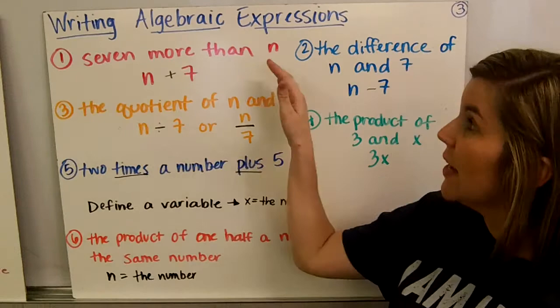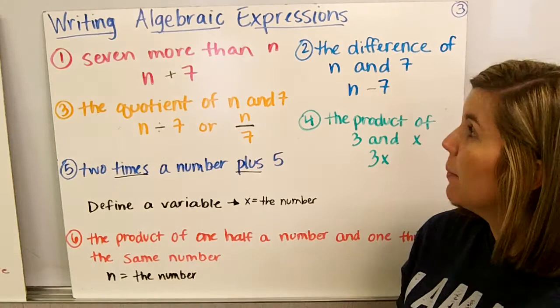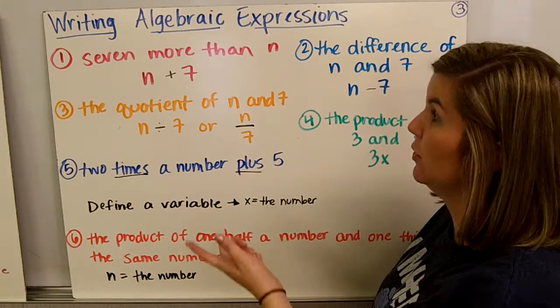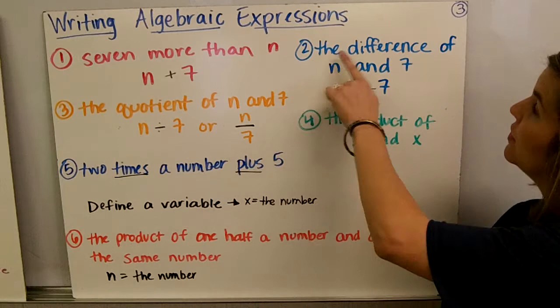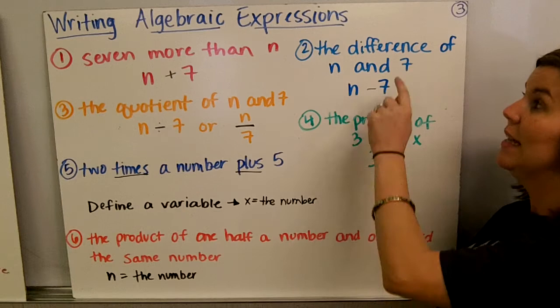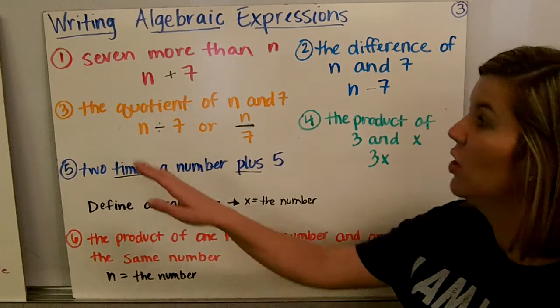Writing algebraic expressions. We're going to take the words and write them as an expression using variables, symbols, operations, and numbers. Seven more than n: more than is one of our addition words, so we write n plus seven. Number two, the difference of n and seven: n comes first in our statement, difference is one of our subtraction words, so n minus seven.